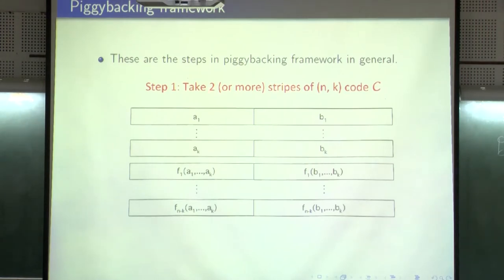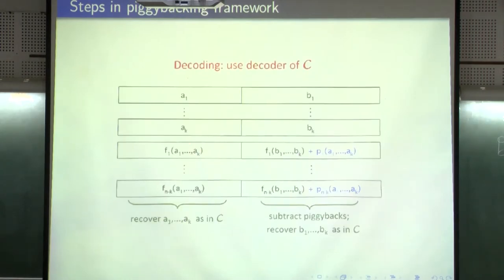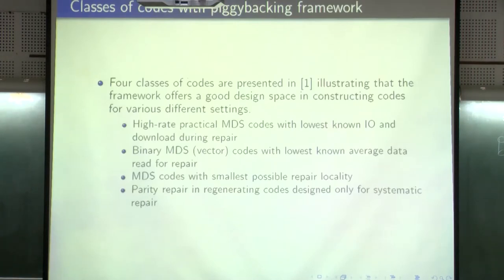The piggybacking framework is quite general. The steps are: first, take two or more stripes of an (n,k) code; second, add carefully chosen piggyback functions of previous stripes to the parities; third, during repair download only the corresponding sub-stripe portions depending on which node is lost, subtract the piggybacks, recover the data, and work backwards. Four classes of codes are presented in the paper, illustrating that the framework offers a good design space for various settings.